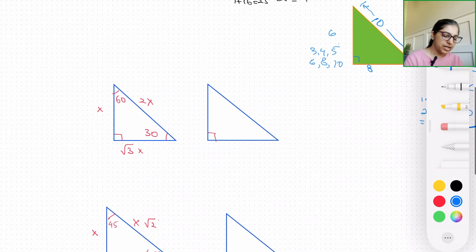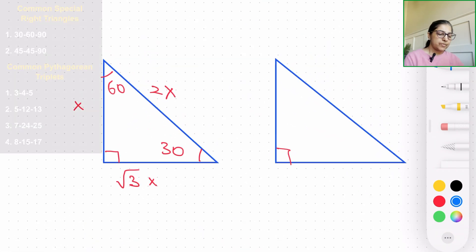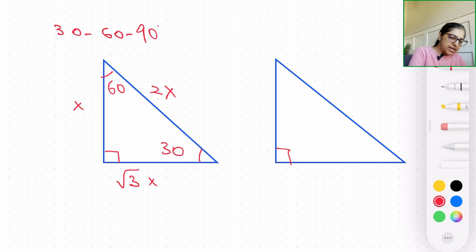One is 30-60-90. So as you can see on the screen, I've already written it. What it tells us is that when the angle measurements inside the right angle triangle are 30 and 60, and of course the third one is going to be 90, then this is the configuration that we see.